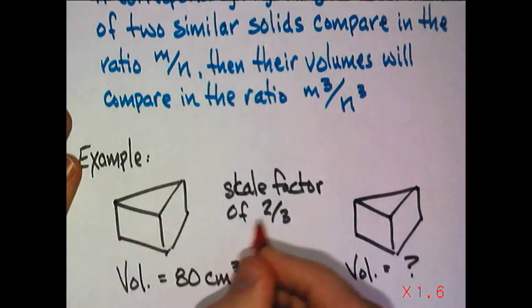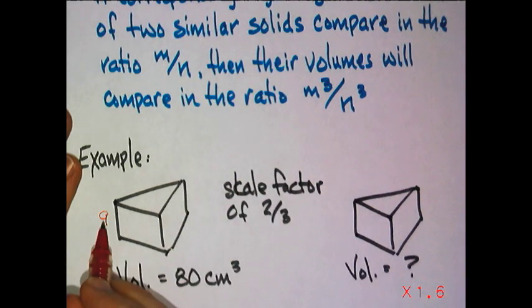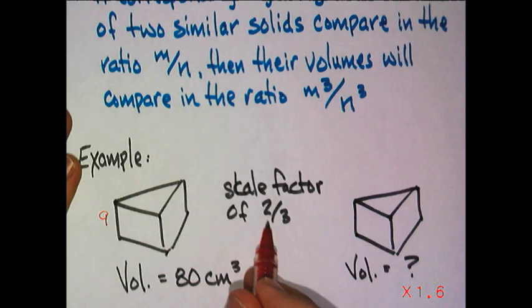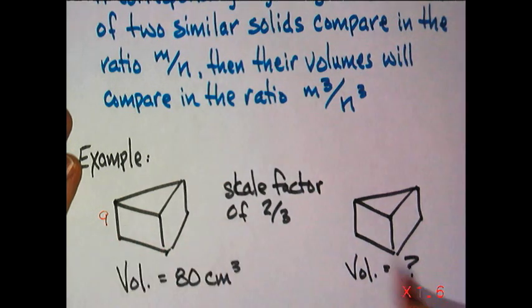So, for instance, if this is nine and two-thirds of nine would be six. So, we could think that,